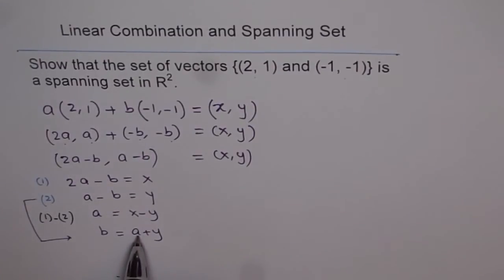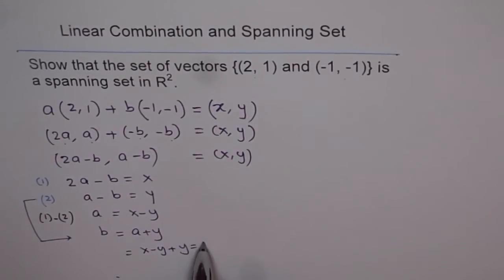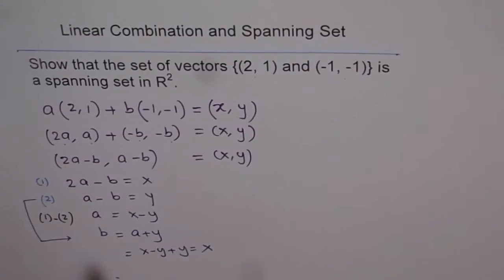Now since a equals x - y, we can find what b is. So we will substitute the value of a, which we found just now, here. So we get x - y + y, that is x. So the value of b from here is equal to x.